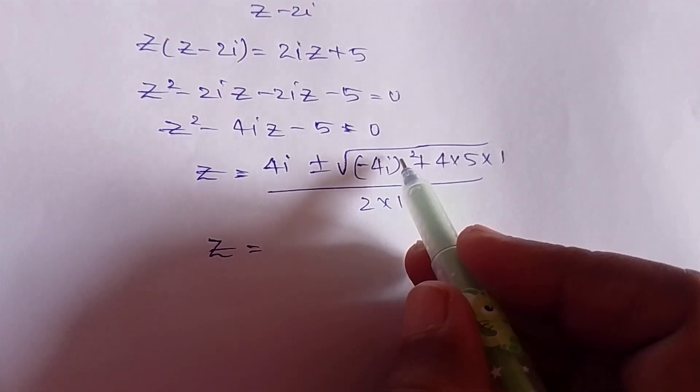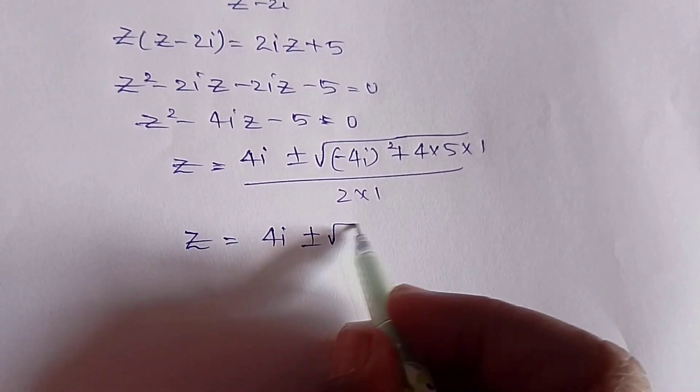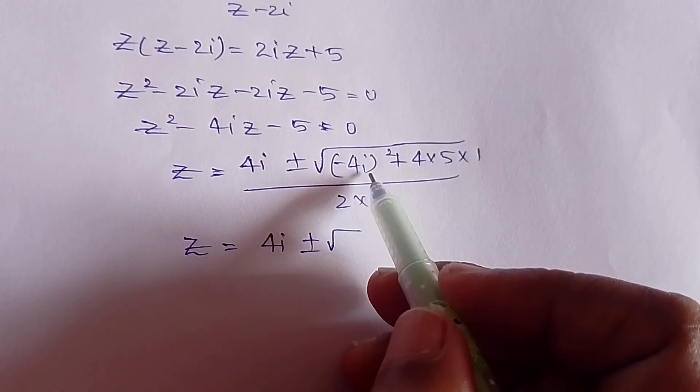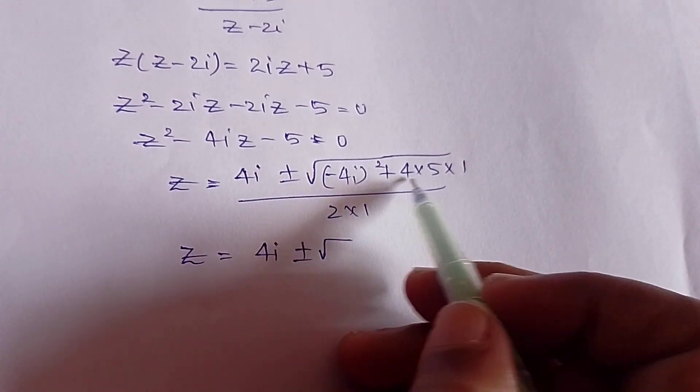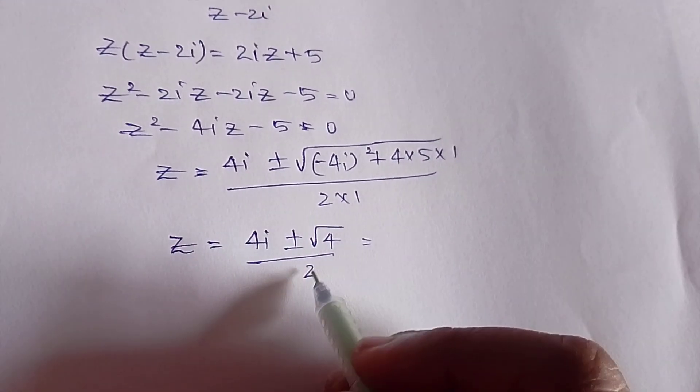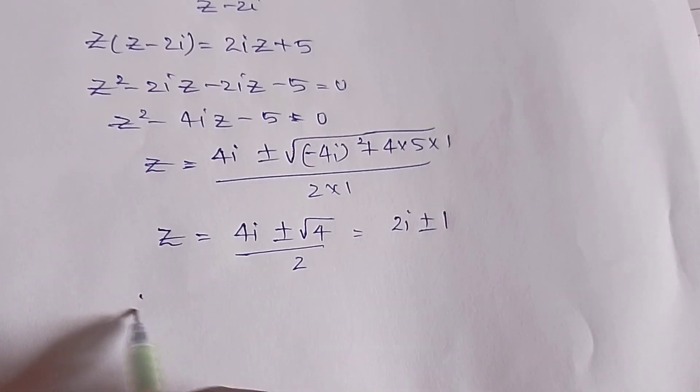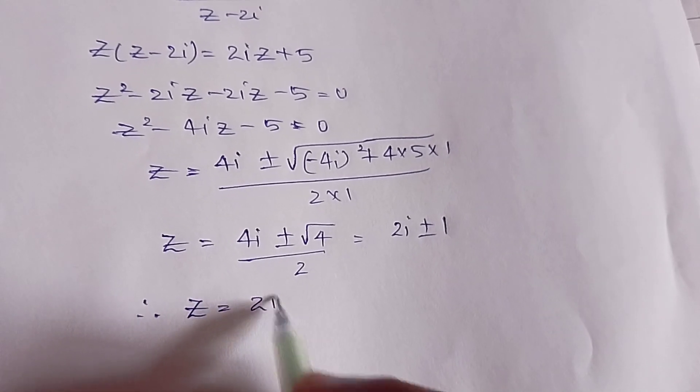So the common factors cancel, and we get z = 2i ± 1. Therefore, the value of z is 2i ± 1. The correct option is option B. The fixed points of the given transformation are 2i ± 1.